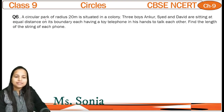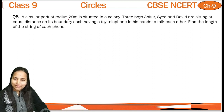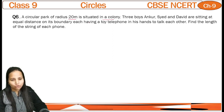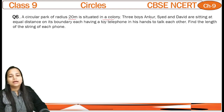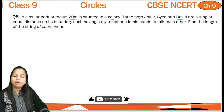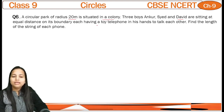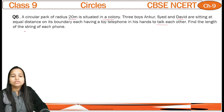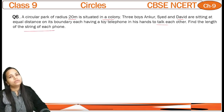The question is: a circular path of radius 20 meters is situated in a colony. Three boys — Ankur, Sayyad and David — are sitting at equal distance on its boundary, each having a toy telephone in his hands to talk to each other. Find the length of the string of each phone.